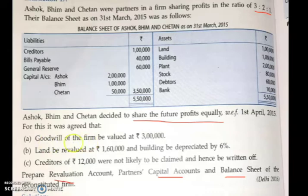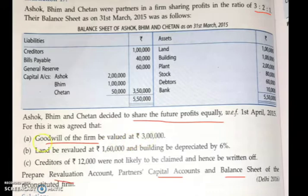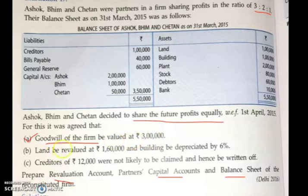Goodwill of the firm. See this question — goodwill of the firm is valued at Rs. 3 lakh. So, goodwill is given to you; 3 lakh goodwill is given. On that, certain calculation work is there. On goodwill, you have to calculate — the value of the firm's goodwill is given to you, so some working note is needed.